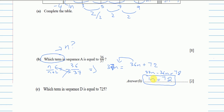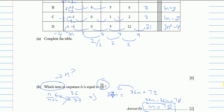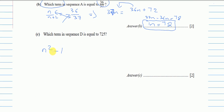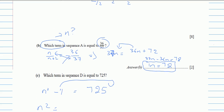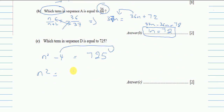Part c uses the formula for d, which is n² - 4. We set n² - 4 = 725, so n² = 725 + 4 = 729. Taking the square root: n = √729 = 27. The paper is solved — thanks for watching, and don't forget to like the video or leave a comment!